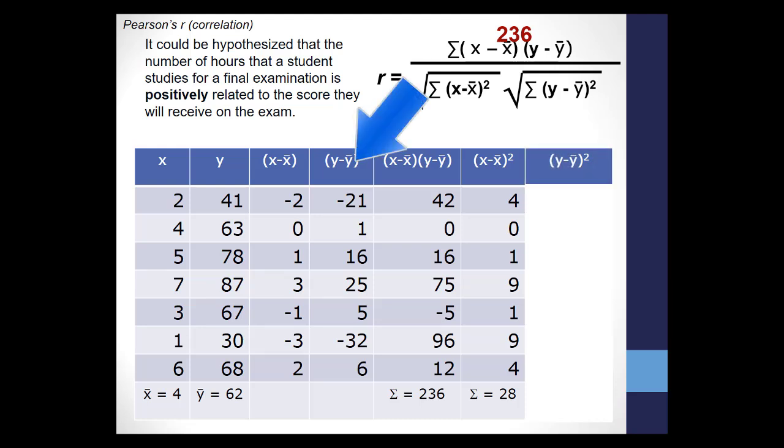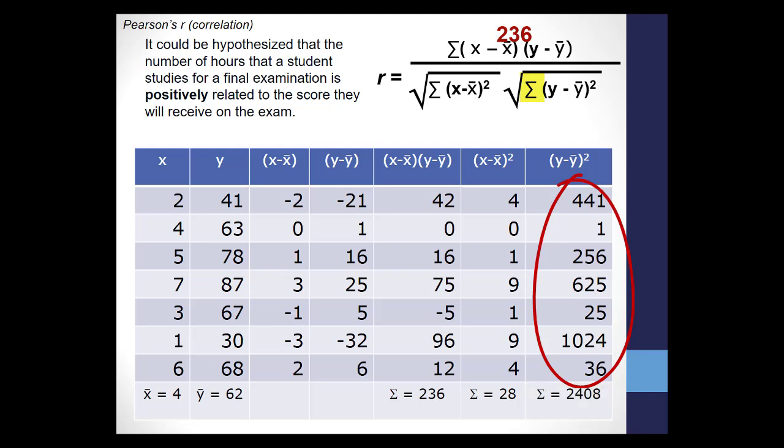We do the same for the y scores. Negative 21 squared is 441, 1 squared is 1, and so on. Add them all together, and you get 2408.